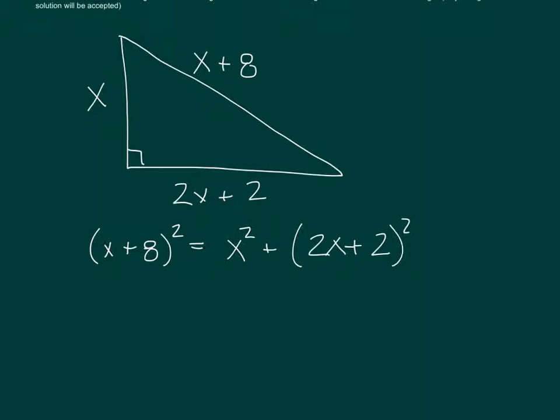And we talked about the fact that you can't distribute an exponent over anything with a plus, meaning this is not going to be x squared plus 64. What we have to do is foil this out, and you will learn how to do this automatically very shortly.